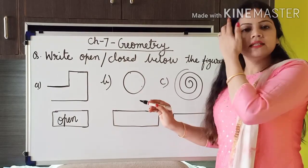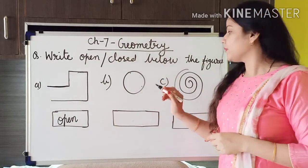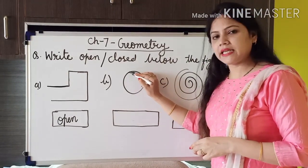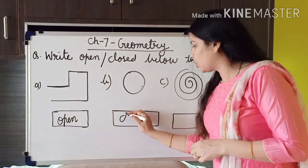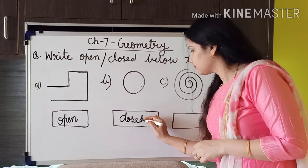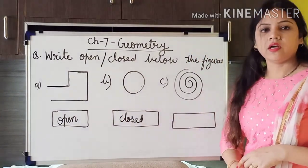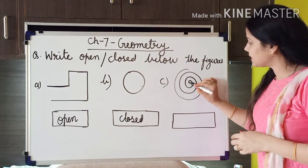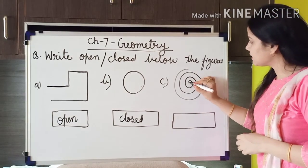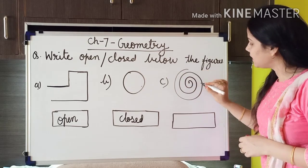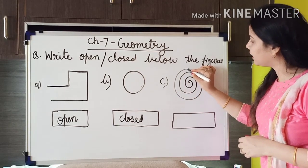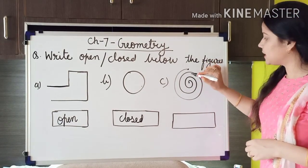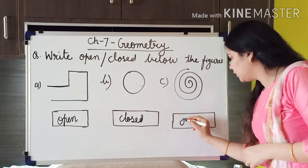Now the second one — you can see I have made a circle. If you draw any circle, from where you start making the circle, you have to end at the same point. So this is a closed figure. Now the third one — here I have made a figure. This is the starting point, and after going through these areas, we end the drawing at a different position. So here again, both the starting and end points are different, so this is an open figure.